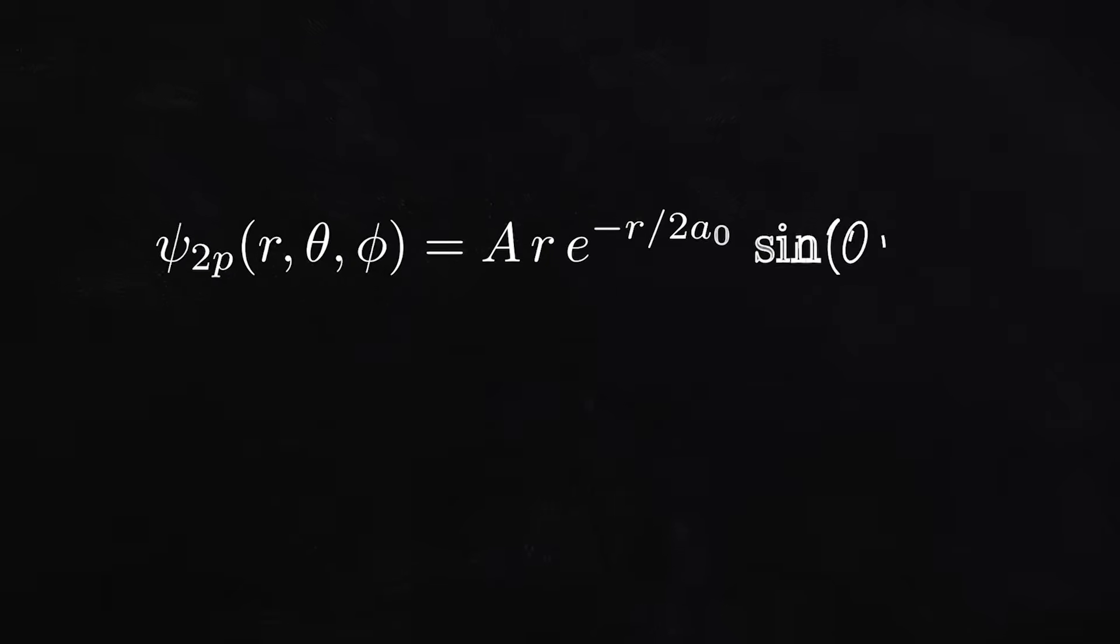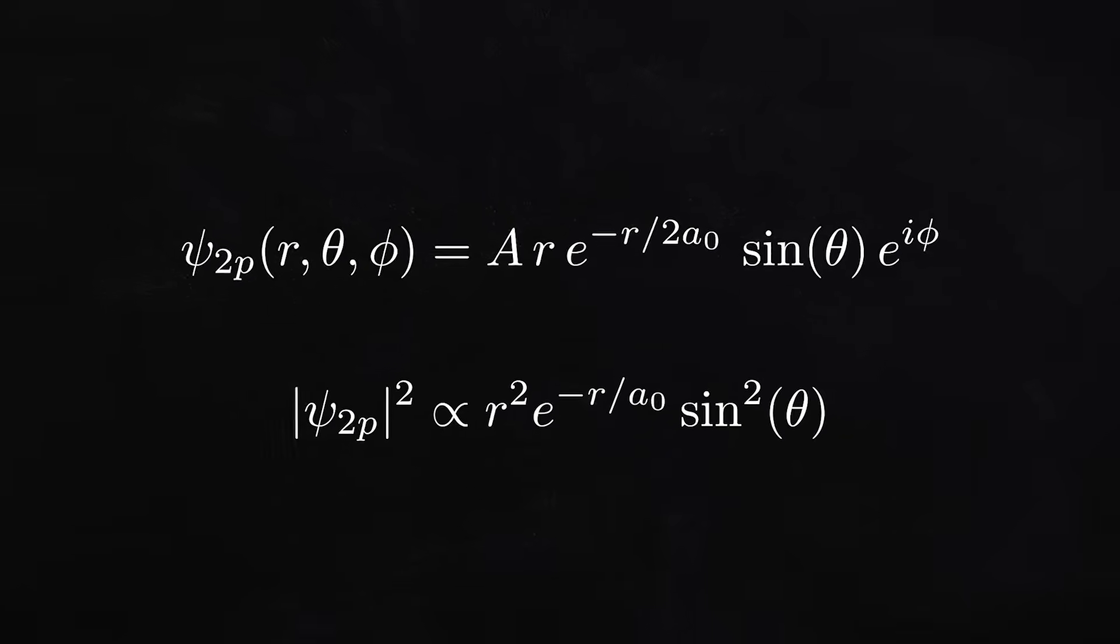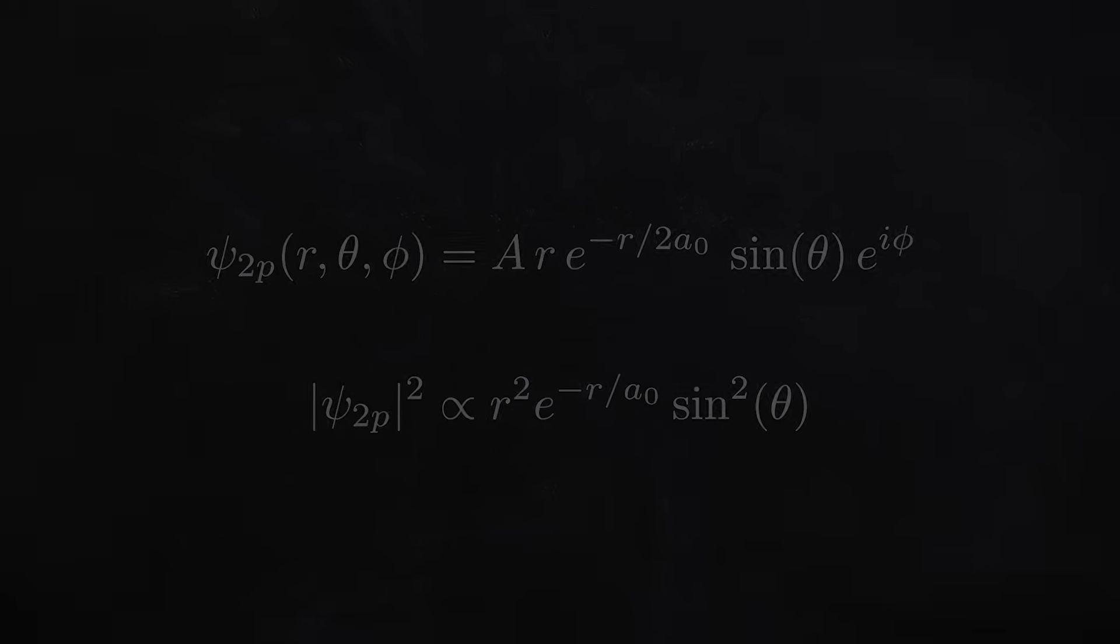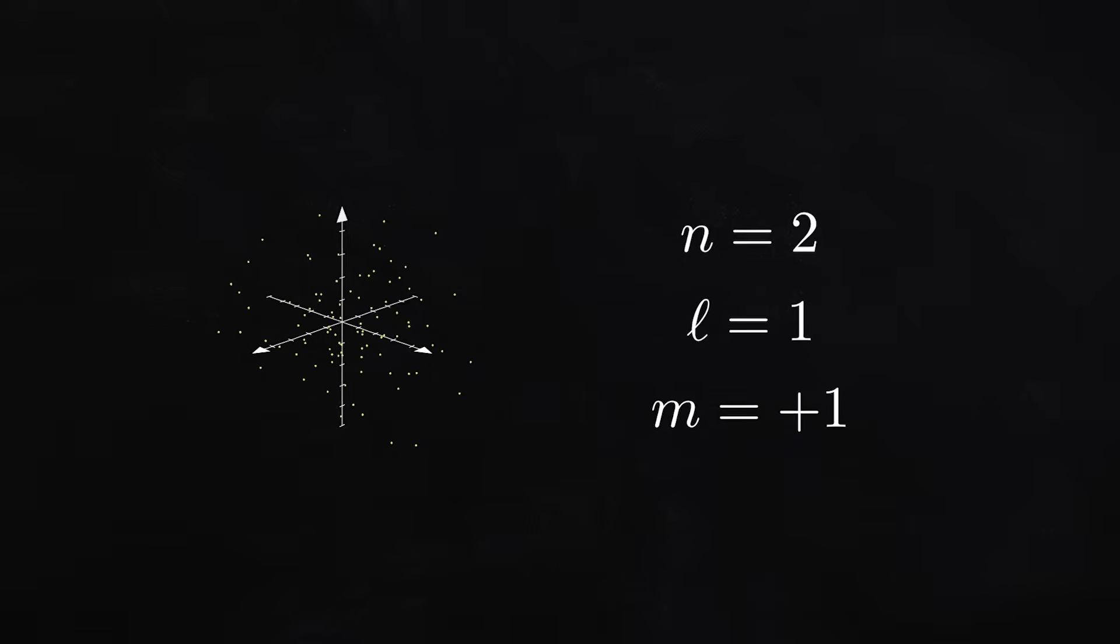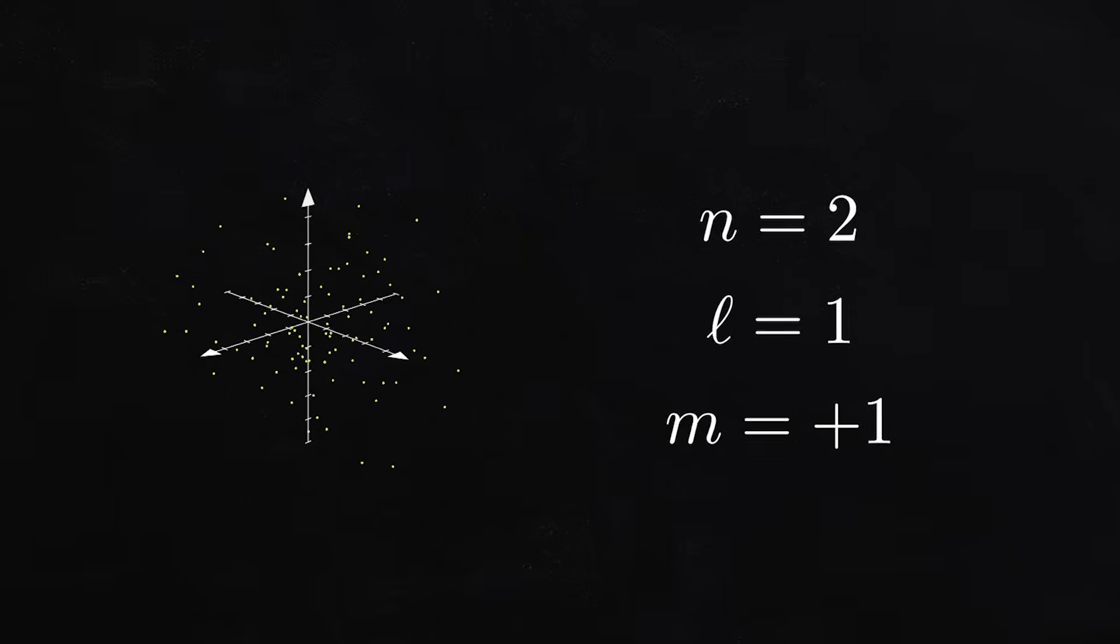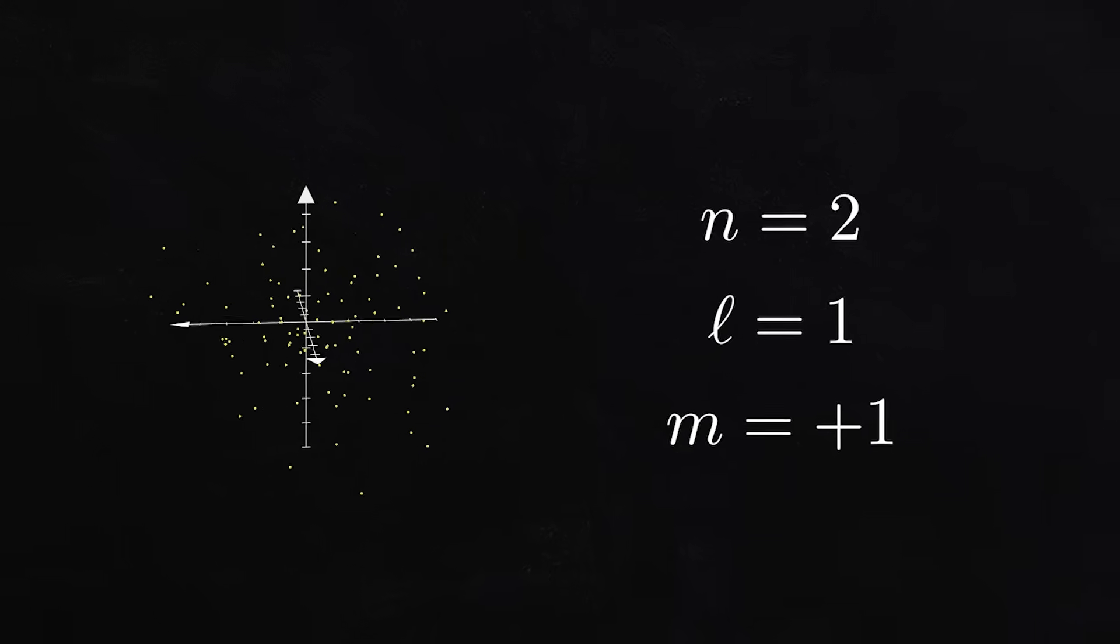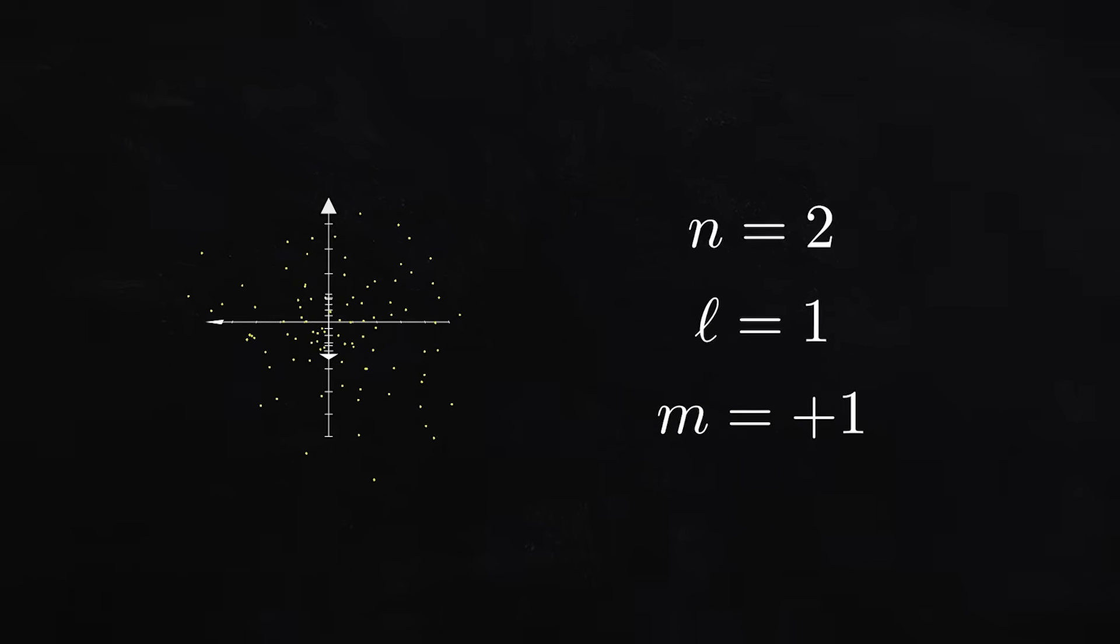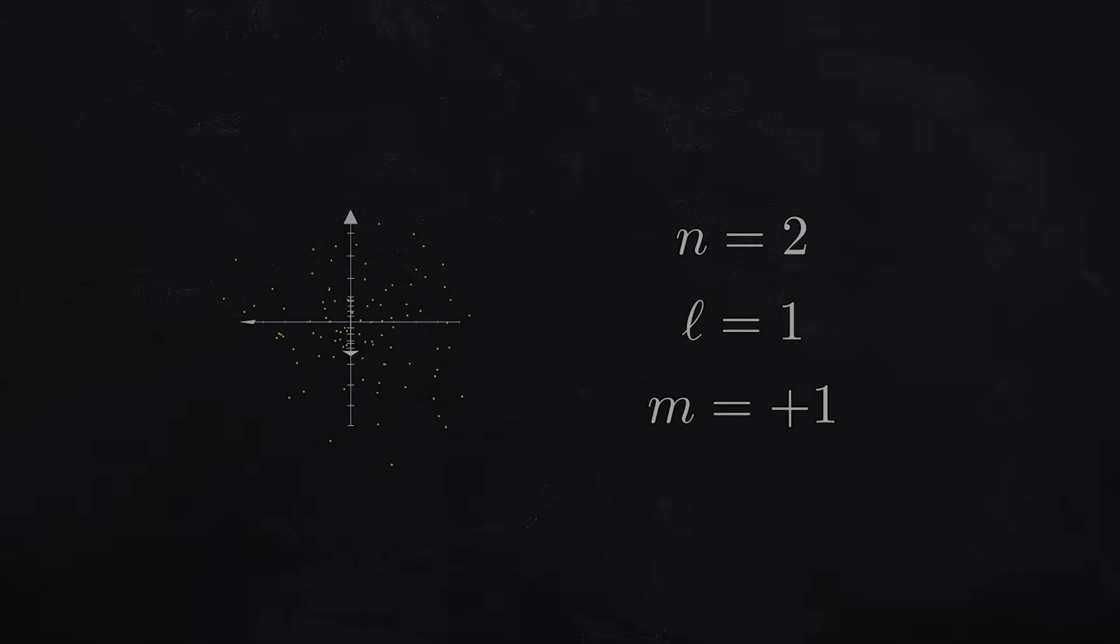Using the wave function, we can calculate not only the probability of the particle being in a given state, but we can also calculate its expected angular momentum, projected angular momentum, energy, and much much more. In each type of calculation, a similar thing happens, and the imaginary components drop out. But this still doesn't explain why we need complex numbers in the first place, or for that matter, where this wave function even came from. Well, to understand that, we need to look at the next branch of math a bit.